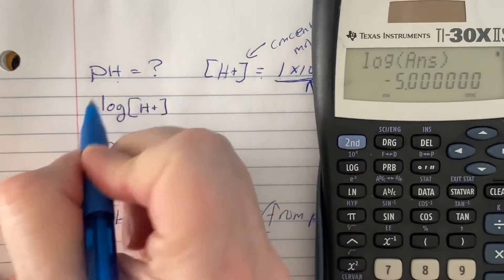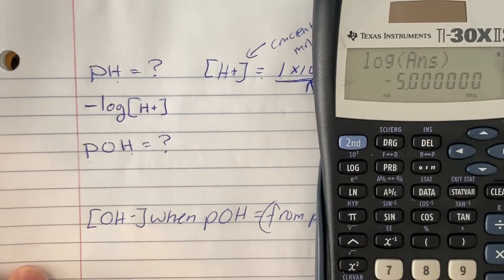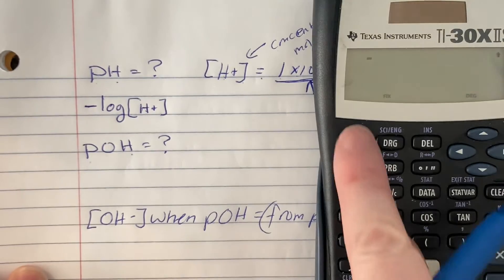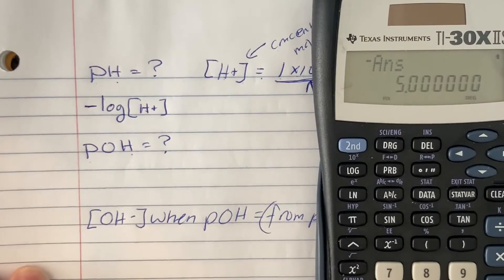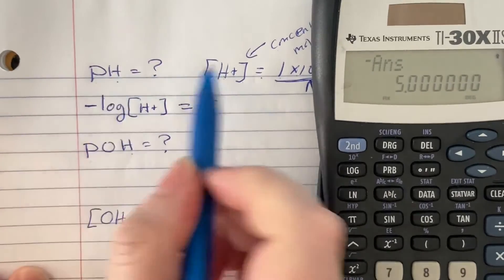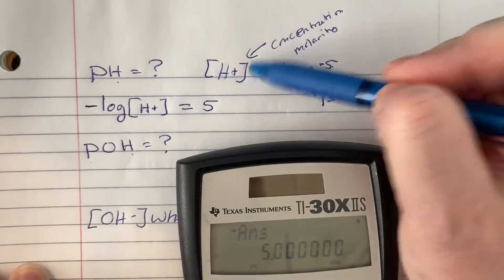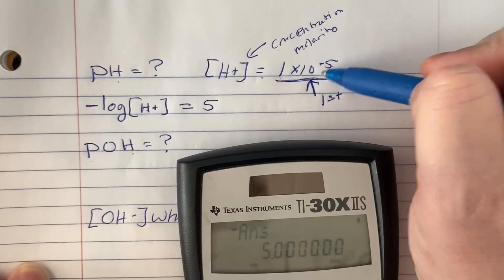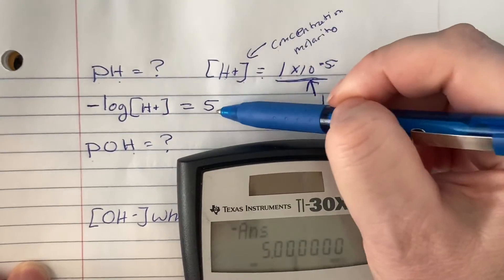So I am taking the log of the hydronium ion concentration. And the last thing I have to do is change the sign, which you could have just written down if you didn't want to do it that way. And that gives me 5. So the pH of a substance with a hydronium ion concentration of 1 times 10 to the negative 5 is 5.